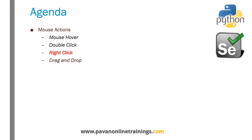Hello everyone, welcome. In this video I'm going to show you how we can perform right click action on an element using Selenium. In the previous videos I discussed mouse over action and double click action, which we can perform using the ActionChains object. Similarly, we can also do right click and drag and drop using the ActionChains class.